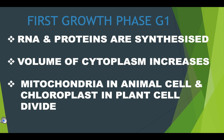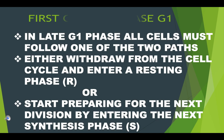In this part of interphase, RNA and proteins are synthesized, the volume of cytoplasm increases, and mitochondria and chloroplasts divide — these two organelles have their own DNA. In late G1 phase, all cells must follow one of two paths: they may either withdraw from the cell cycle and enter a resting phase, or start preparing for the next division by entering the synthesis phase.